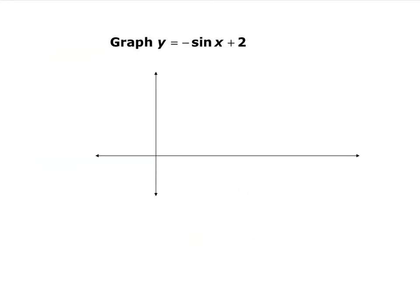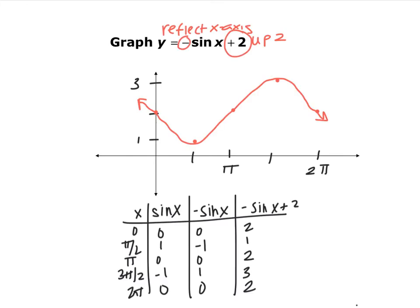Using that parent function and the same transformations we've been using all year, graph y = -sine(x) + 2. The negative reflects across the x-axis, so instead of going middle, high, middle, low, middle — you go middle, low, middle, high, middle. The +2 on the end moves everything up 2, so instead of the middle points being on the x-axis, they shift up to y = 2. A table with anchor points is shown as well.